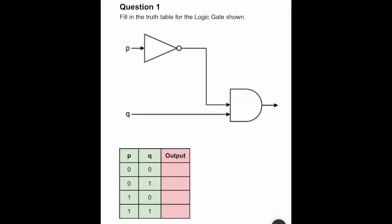In question one we have a very simple circuit with two inputs P and Q. The first gate that P meets is a NOT gate, which reverses whatever signal is coming into it. So if a one is coming in it'll produce a zero, and if a zero is coming in it'll produce a one. The second gate at the bottom right is an AND gate.